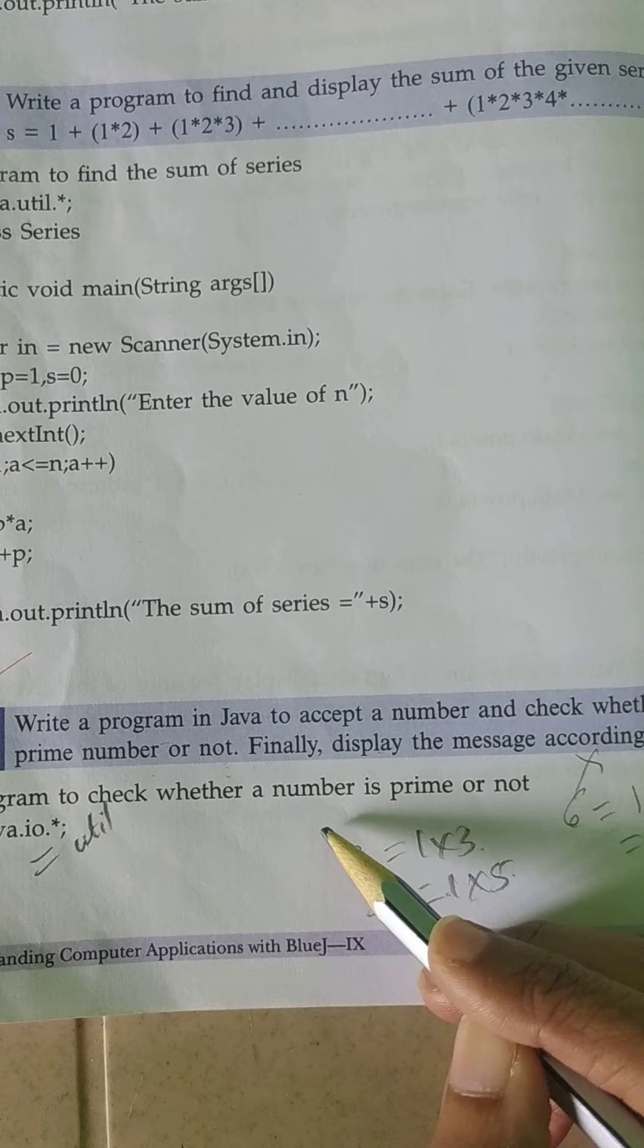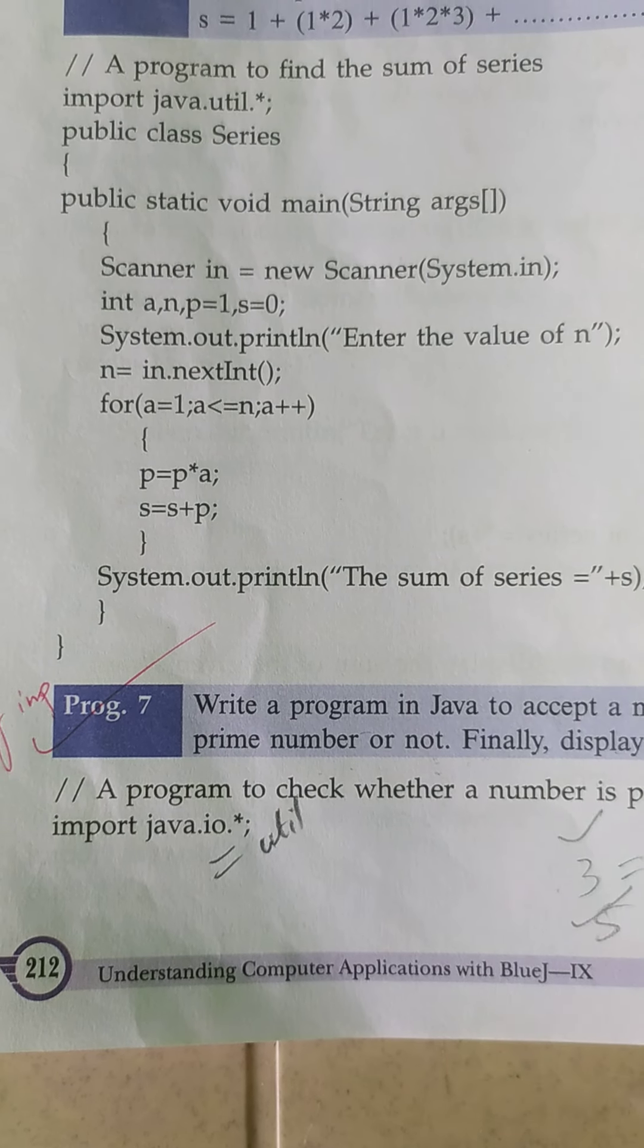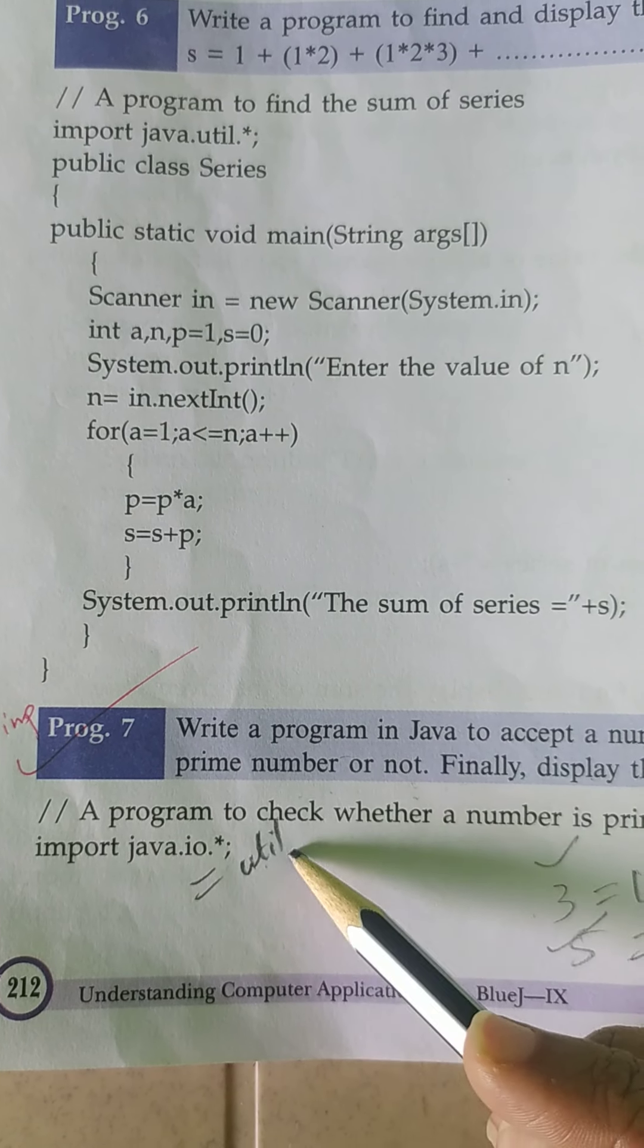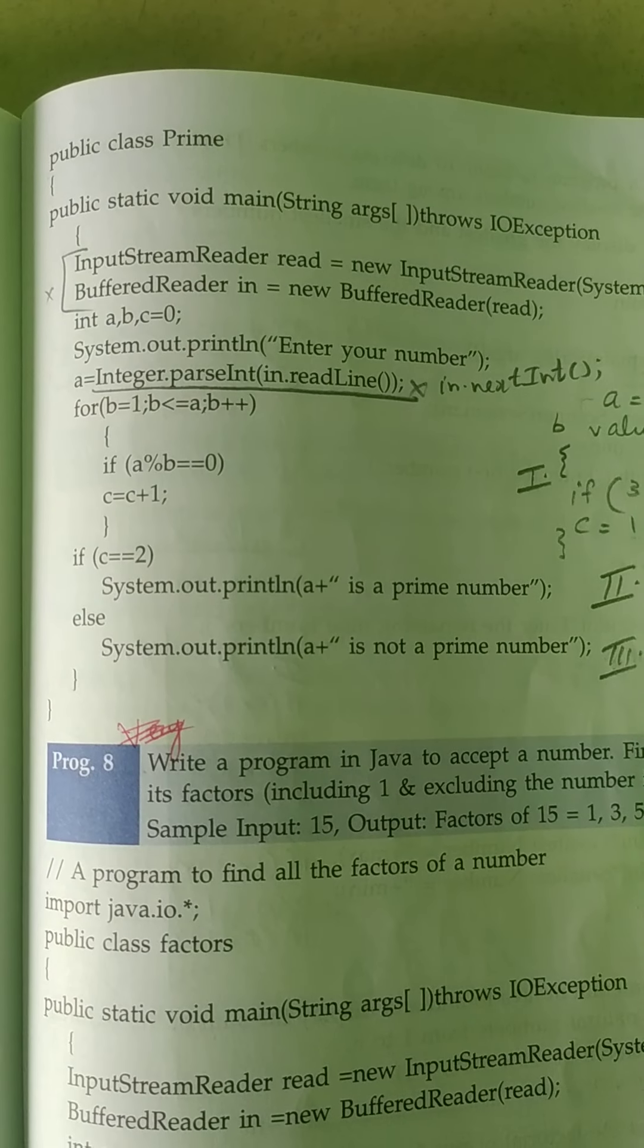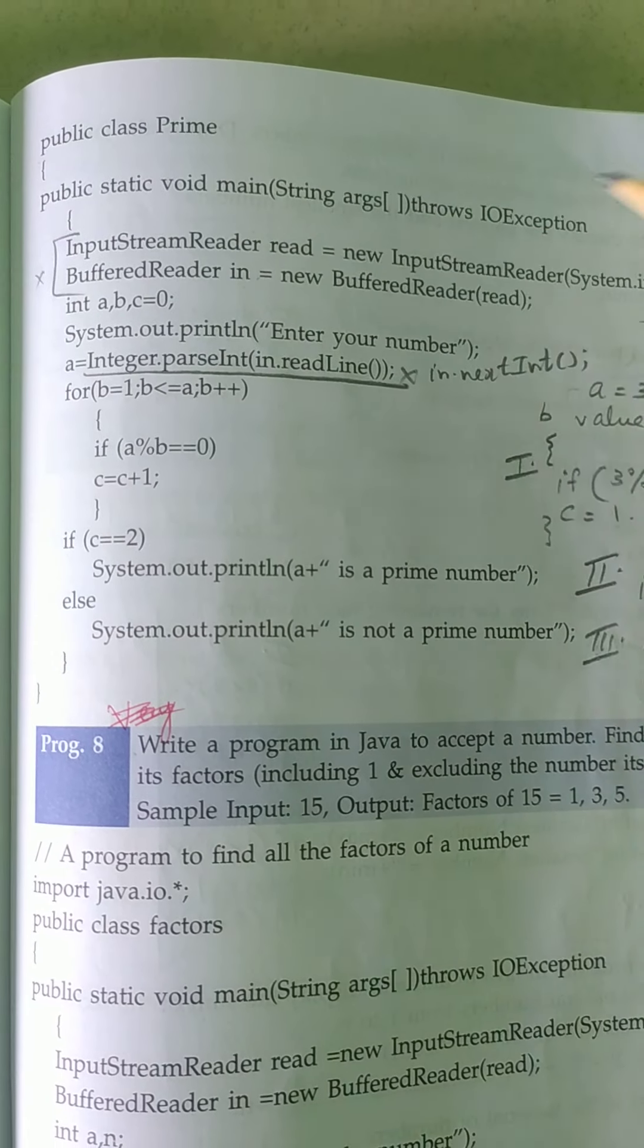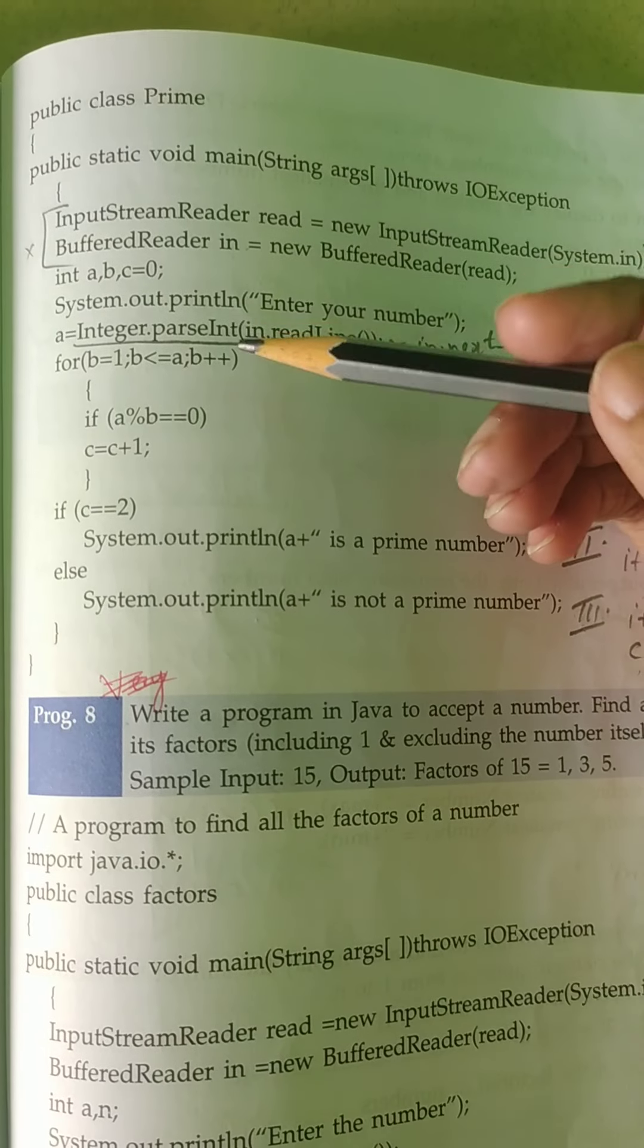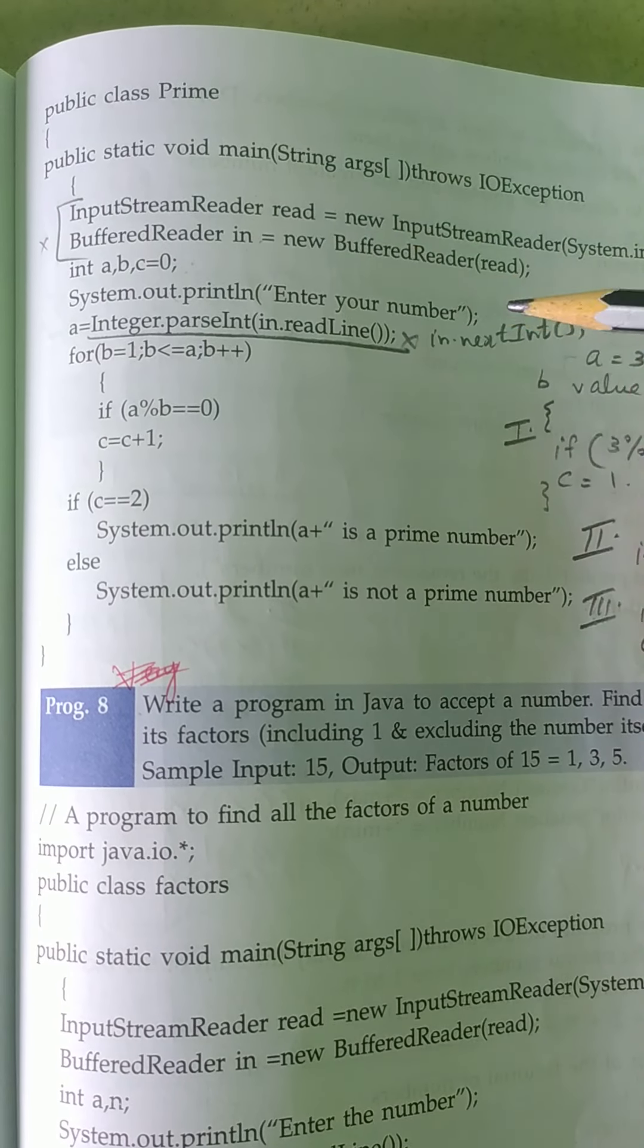If you want to use scanner class, you can use util package instead of IO package. Class name is prime, main function statement. Instead of these two statements, you can use scanner class. Three variables you are going to declare. First, enter your number.